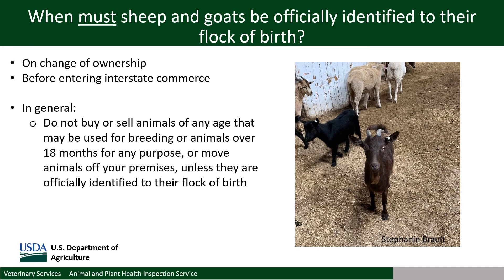Sheep and goats need to be officially identified to their flock of birth on change of ownership and before entering interstate commerce. Interstate commerce is defined as trade, traffic, transportation, or other commerce between a place in a state and any place outside that state, or between points within a state but through any point outside that state. This obviously includes crossing state lines, but it also includes being loaded or unloaded at any premises where animals have been received from interstate commerce or from which animals have moved in interstate commerce. This would include most events or markets. Additionally, entering interstate commerce includes an animal that leaves a premises on which it resides if their owner engages in the interstate commerce of animals. Therefore, it is an uncommon situation when animals moving off of a premises would not require some sort of official identification to their flock of birth.